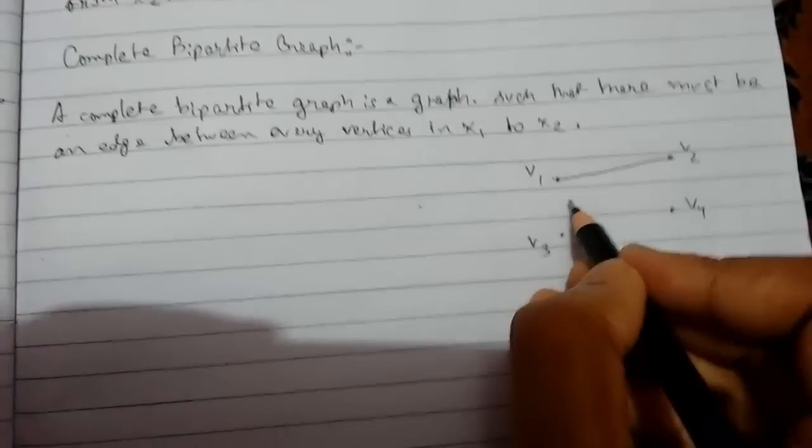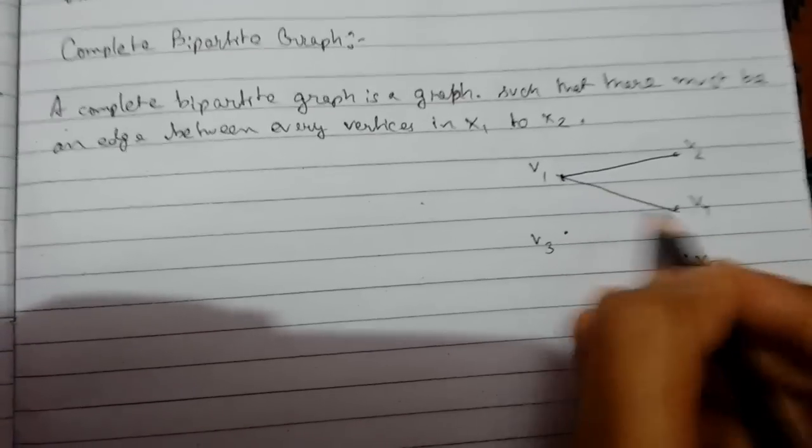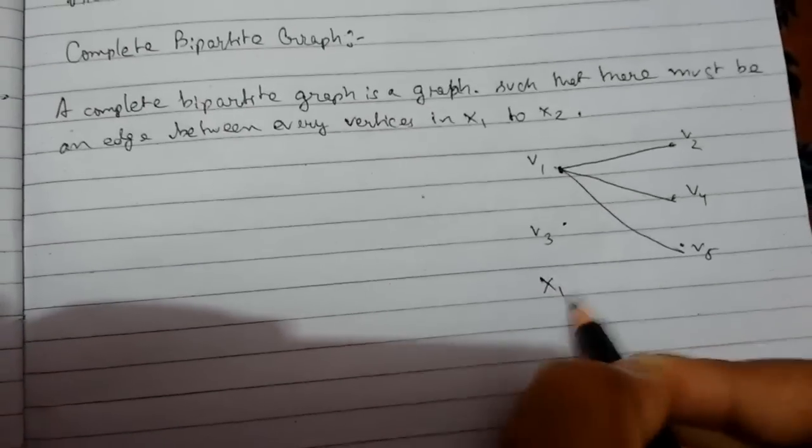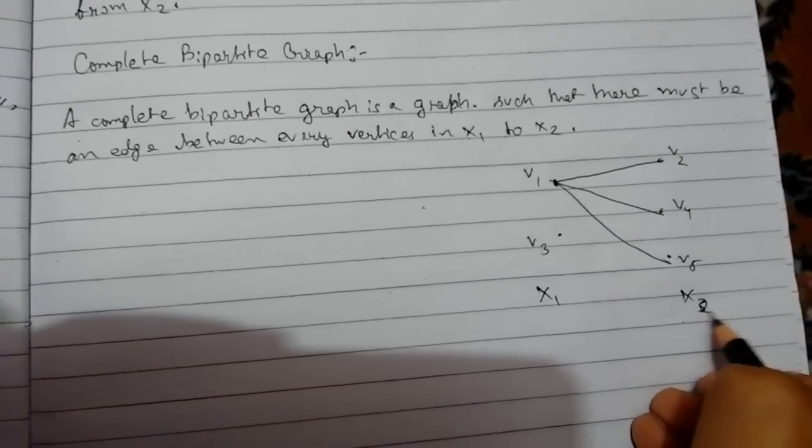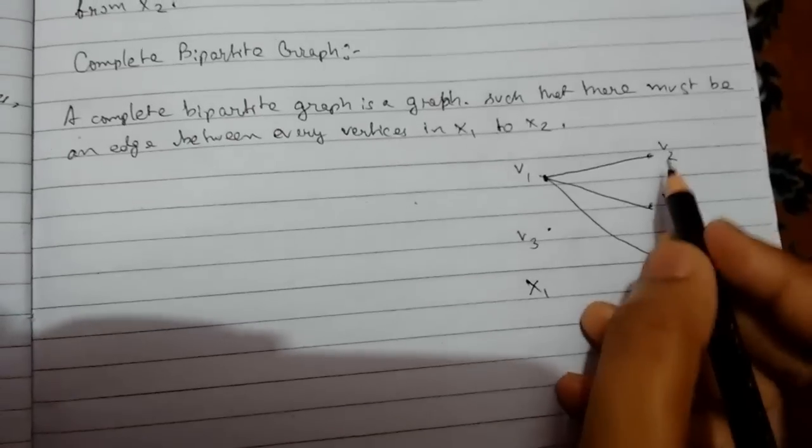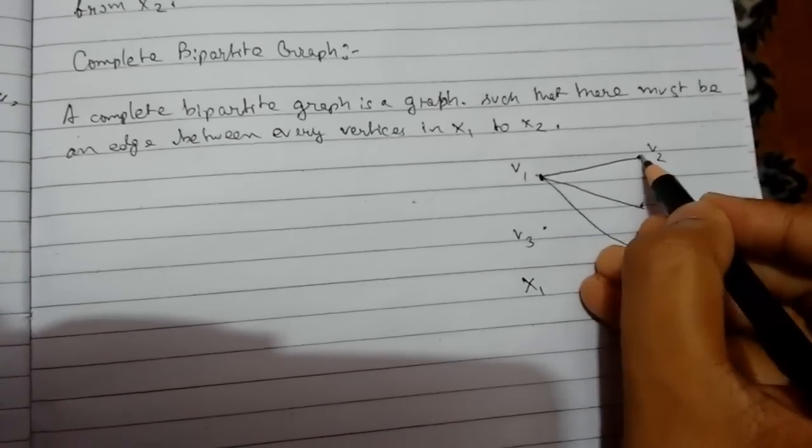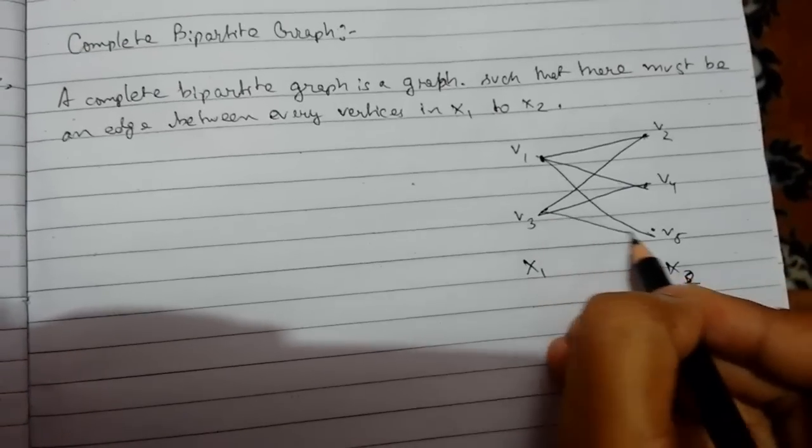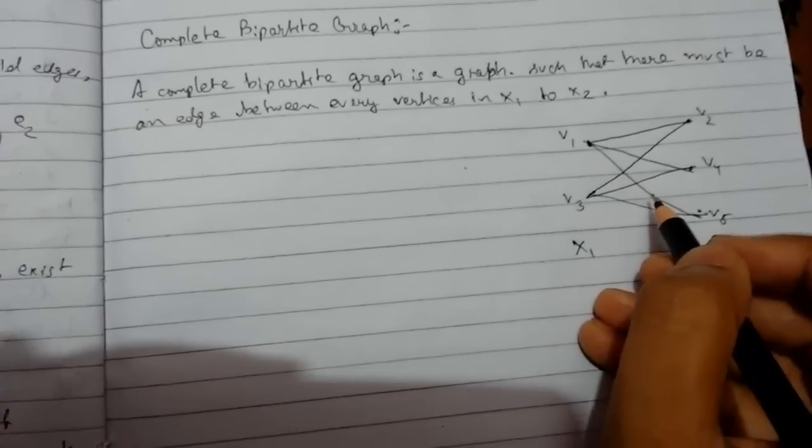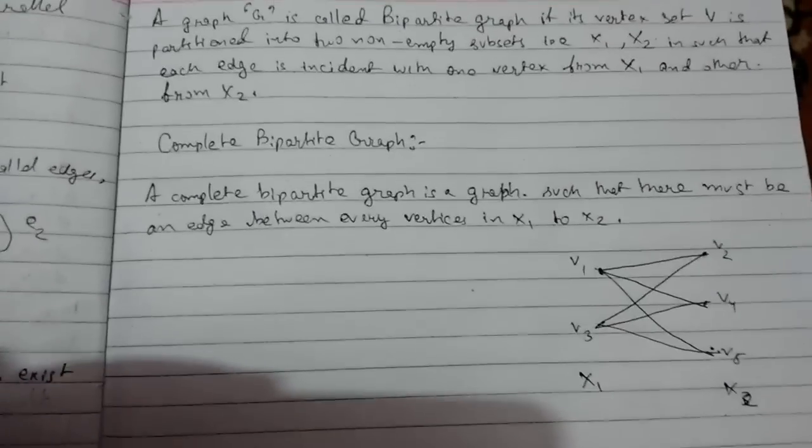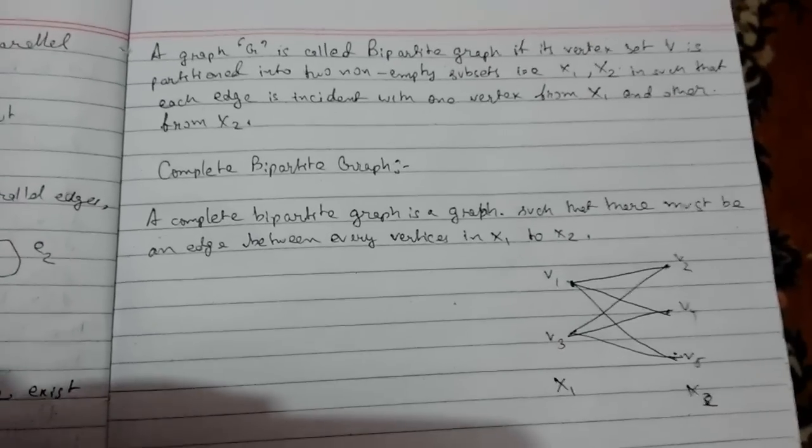For v1, it is incident to v2, v4, and all these are incident to v1. Similarly, it will be incident to v3. This is a complete bipartite graph. This was all about bipartite graphs. Thank you for watching.